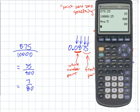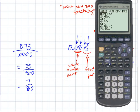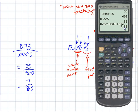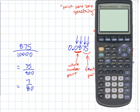Or if you have a fancy calculator, if you go 875 divided by 10,000, you might have a feature that changes it into a fraction in lowest terms — seven out of 80 right away. I still need you to be able to do this yourself. When we do assessments, likely some of it won't allow a calculator, so don't get totally dependent on that feature.